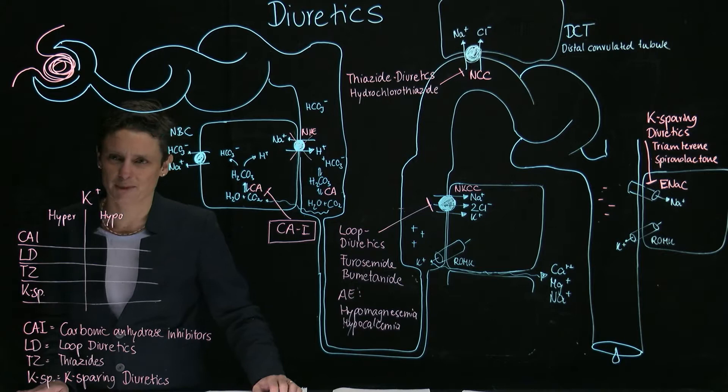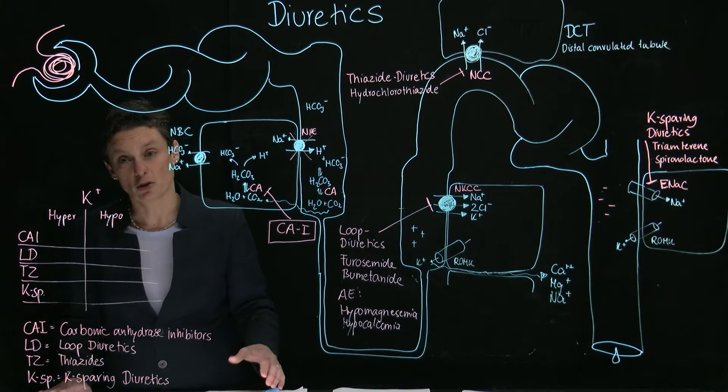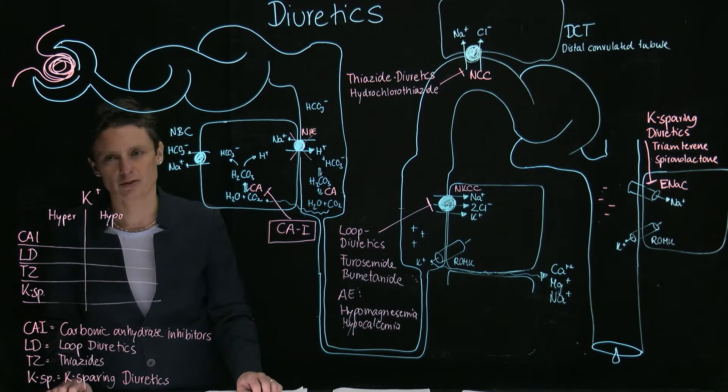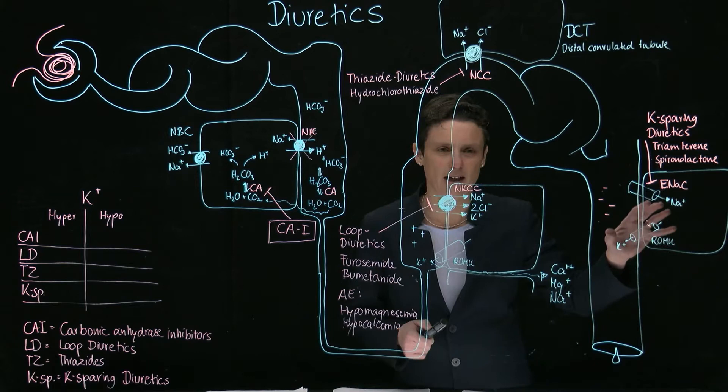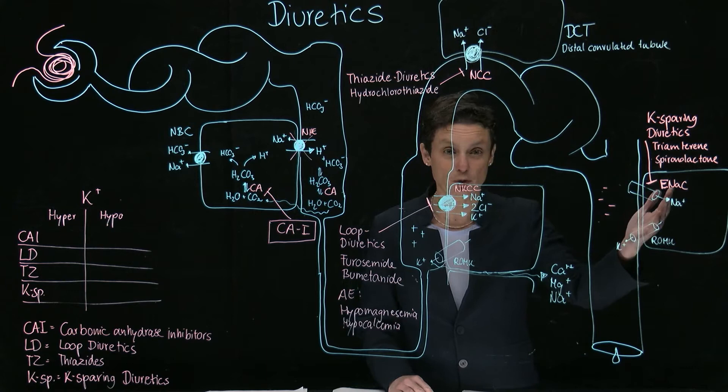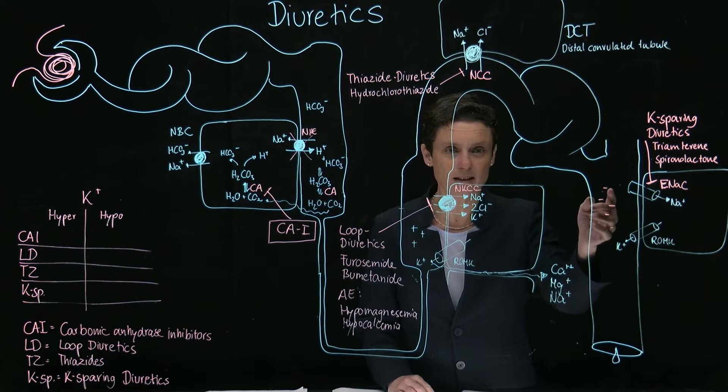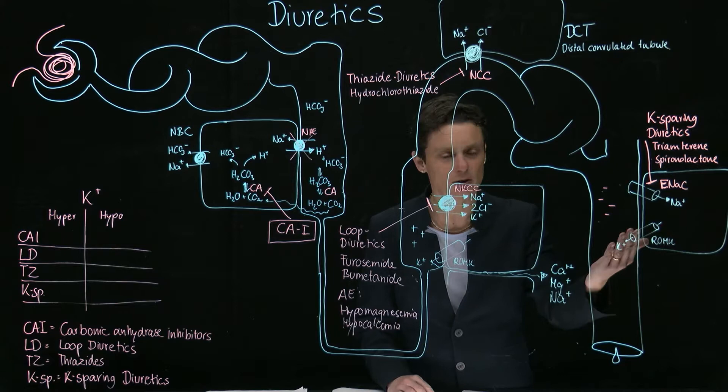We're going to start with effects of diuretics on potassium. The majority of potassium is reabsorbed paracellularly in the proximal tubule and also in the thick ascending limb. But there's some fine-tuning happening in the connecting tubule and collecting duct. ENaC reabsorbs sodium, but as sodium gets reabsorbed, there are some negative charges left behind, and this attracts potassium to leak right back out via the ROM-K channel.